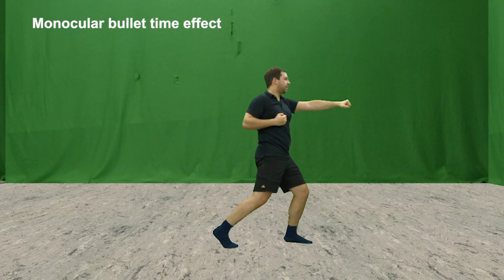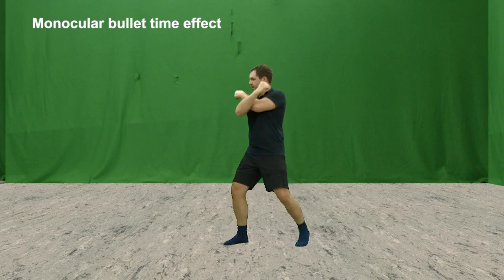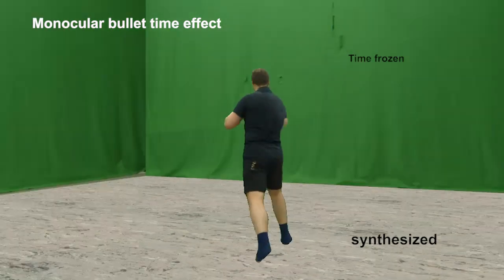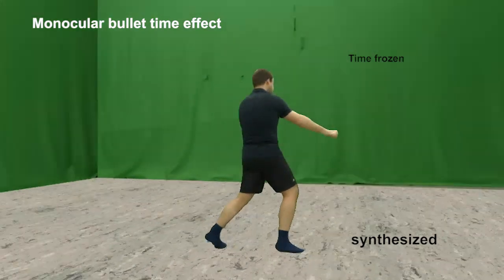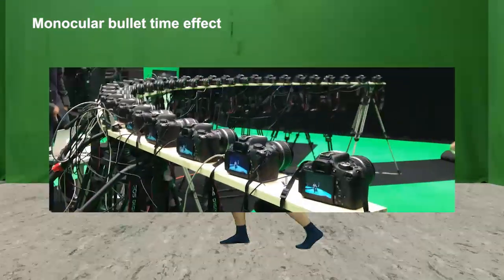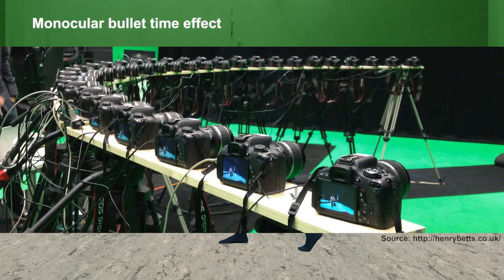With our method, we can create bullet time effects just from a single monocular video. Here, we freeze time and virtually rotate the camera. Previously, this was only possible with an expensive dense camera setup.